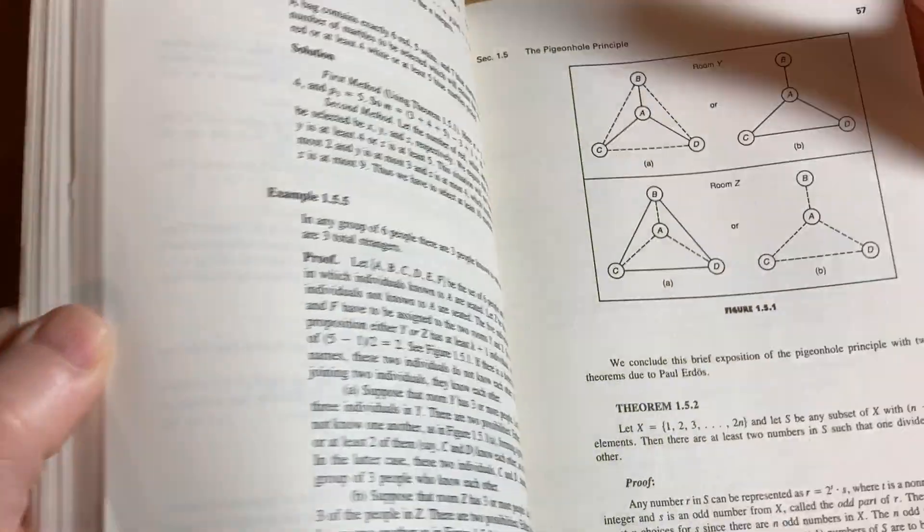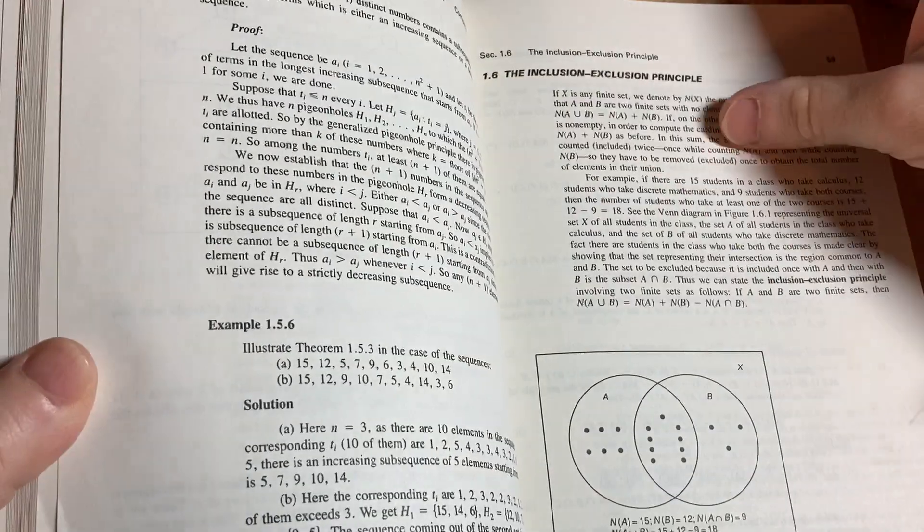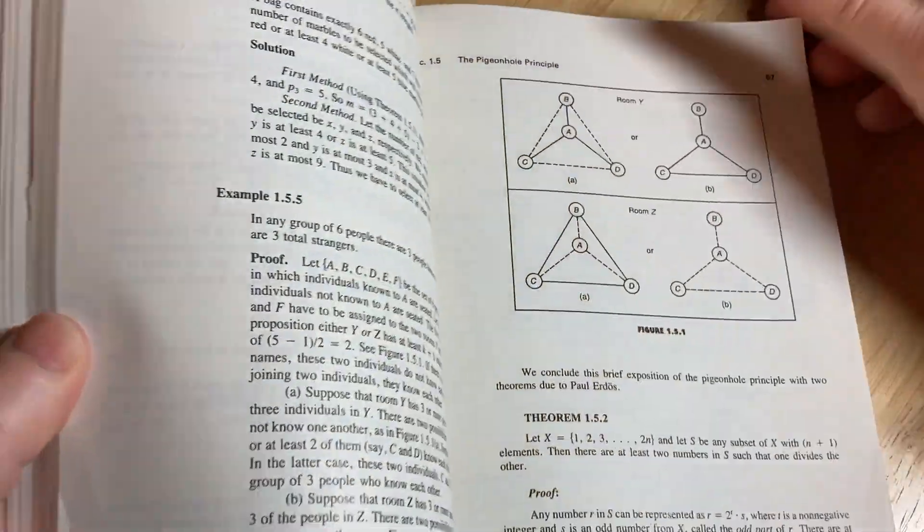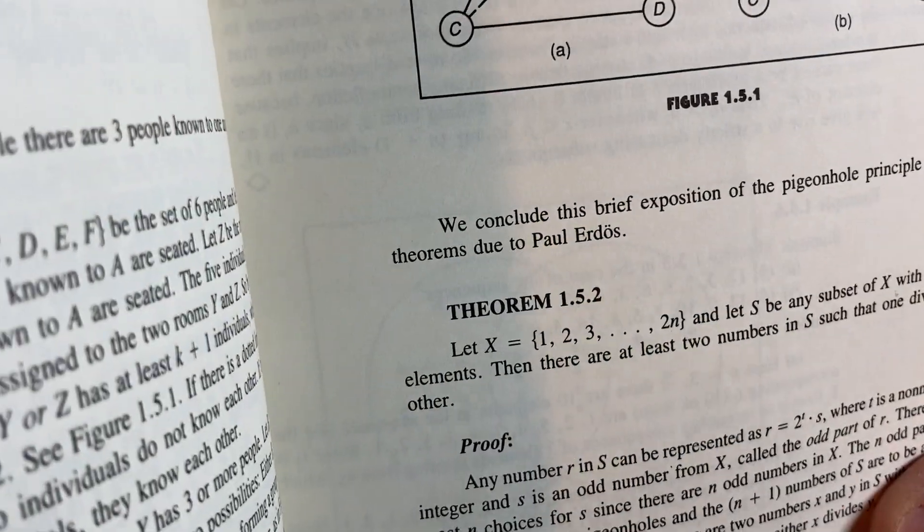And the proofs are pretty interesting, pretty clever. You'd be like, whoa, that's cool. So maybe the proofs are due to Erdős. Erdős was a mathematical genius.